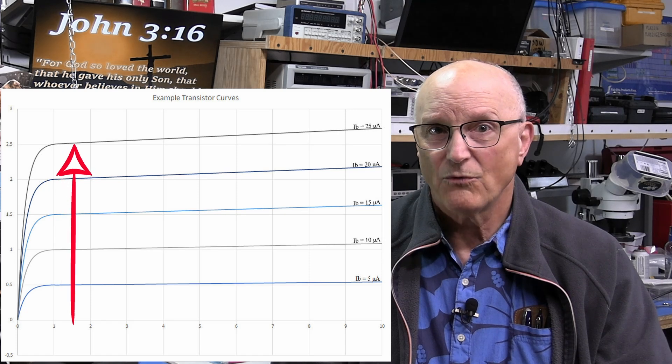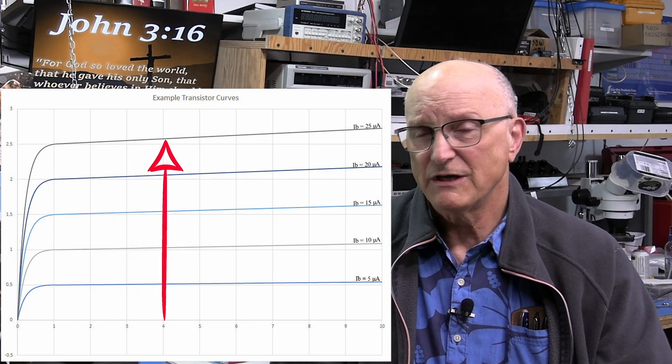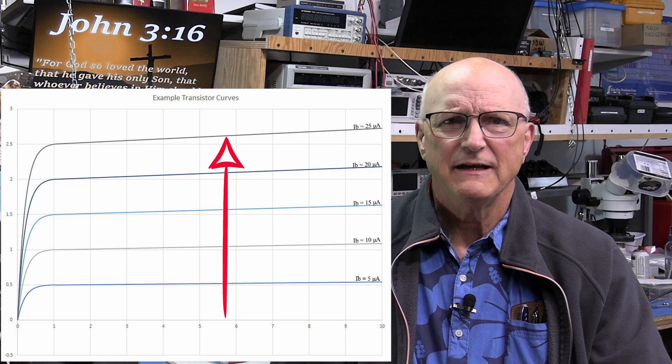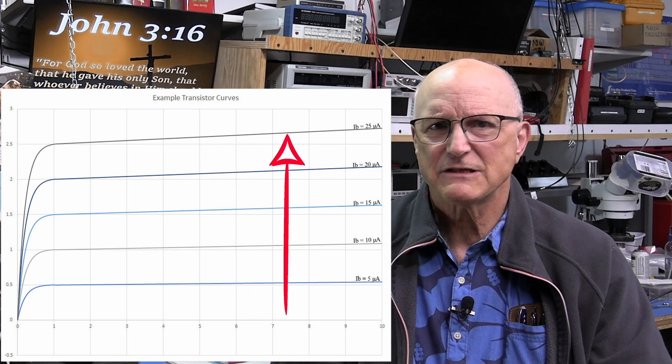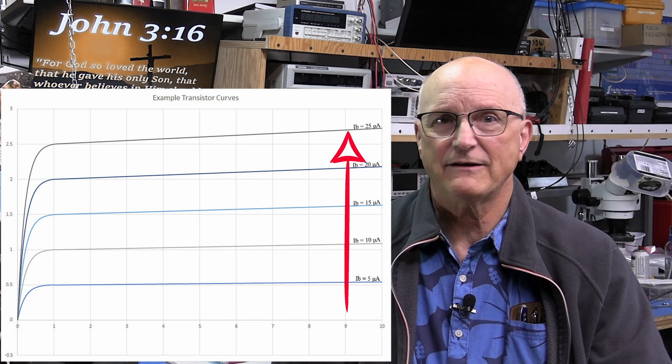This is why the transistor curves, as seen when using a transistor curve tracer, have a slight positive slope to them in the linear active region. Now that we know why the VCE-IC curves have a slight positive slope in the linear active region, we can proceed to see what this has to do with the Early Voltage. Now we're going to be diving into a bit of weirdness, which is the standard explanation of where this Early Voltage comes from.